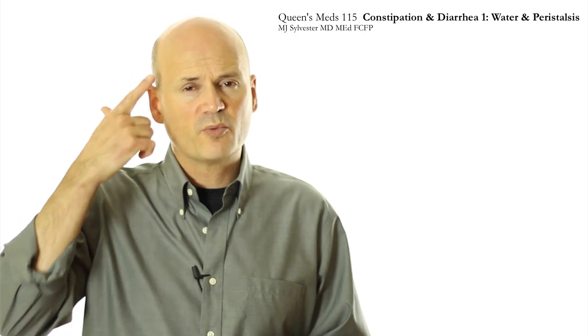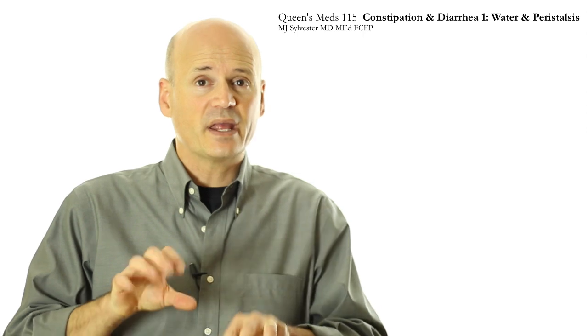One of the ways your enteric nervous system affects peristalsis is through its communication with your brain. Anyone who's had a difficult exam or a talk to give and had to run to the bathroom beforehand knows about this. When you get stressed, your enteric nervous system causes more peristalsis. The same is true with people with irritable bowel syndrome — when their stress level increases, so do their symptoms, including symptoms of increased peristalsis.